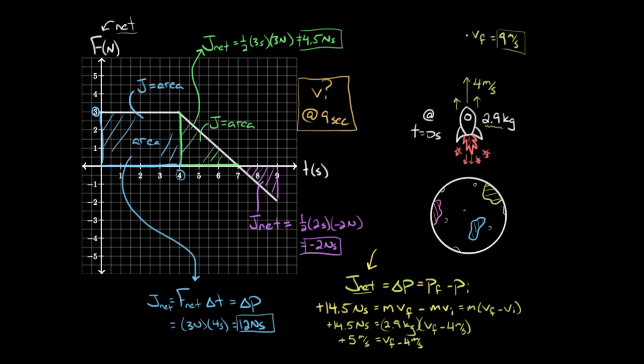The way you find it, so recapping the way we did this, we found the area under the curve, because the area under a curve, under a force versus time graph, represents the impulse on the object. We found it for the entire trip, noting that underneath the time axis, when this curve goes underneath the time axis, the net impulse is gonna be negative. We added up all the net impulse, we set it equal to the change in momentum, we plugged in our values, and we solved for our final velocity after nine seconds.